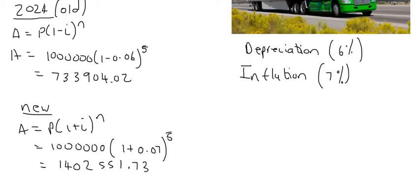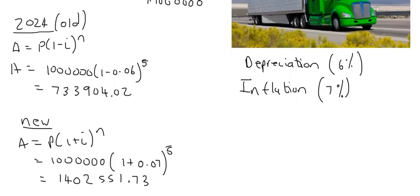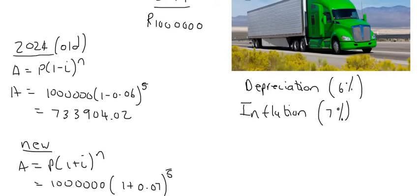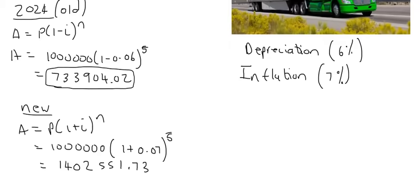Now we have to be able to analyze what's just happened here. His truck that he bought now in 2019 is going to decrease in value, so by the time 2024 comes, his truck will be worth that amount. He'll probably be able to sell it to someone. The new truck that he'll want to buy at that time will be 1.4 million.